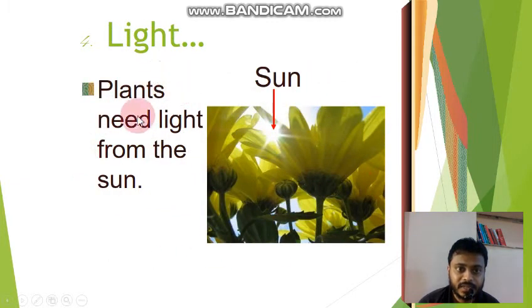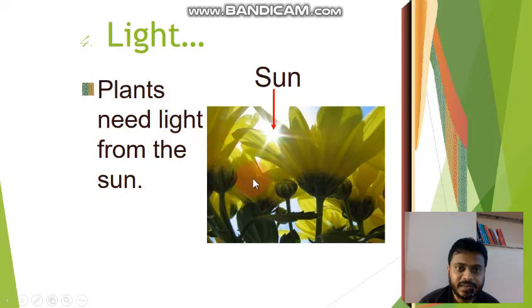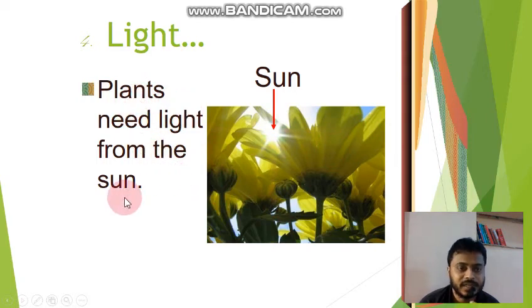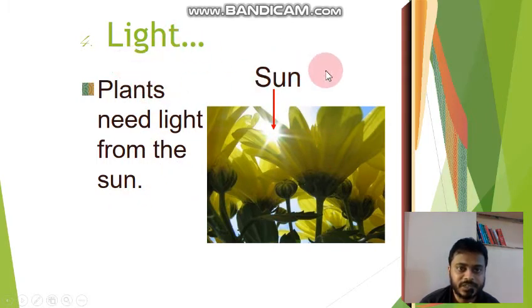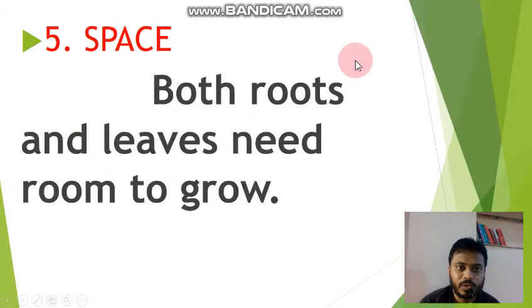Light. Plants need light from the sun to make their food. That is the fourth thing that plants need to grow.